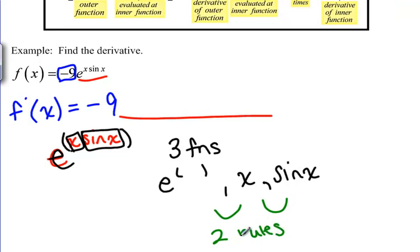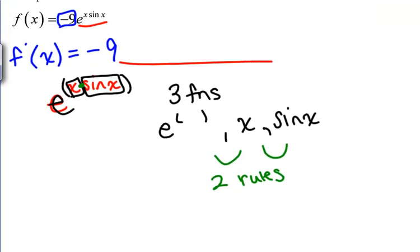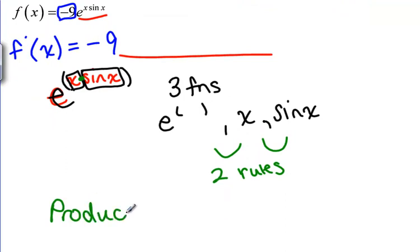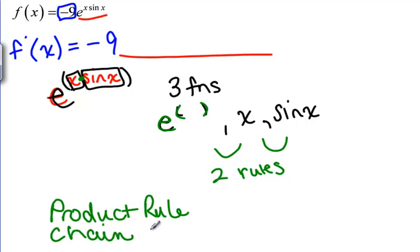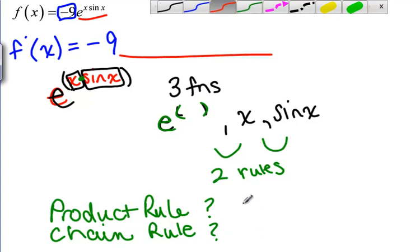Which two rules are we going to need to use in this problem? Well, we have x multiplied by sine x, so we should be thinking it's going to make sense to use the product rule. We also have e to the something where the something is a complicated function — that means we're going to need the chain rule; that's a composition. Those are our two rules, but how do we know which ones to do first? The answer is we need to look at what's the most outside thing and work from the outside in.